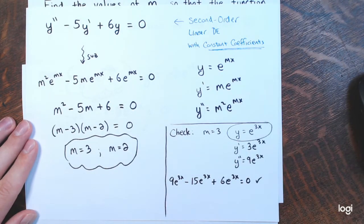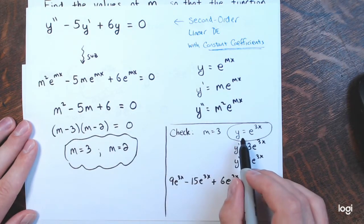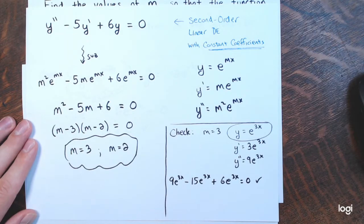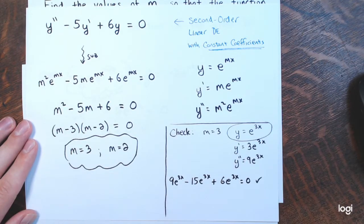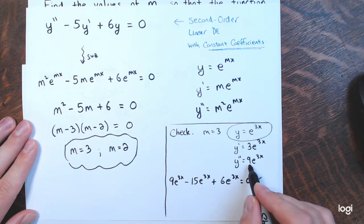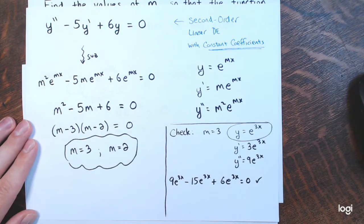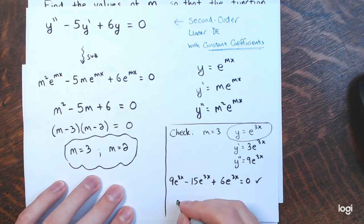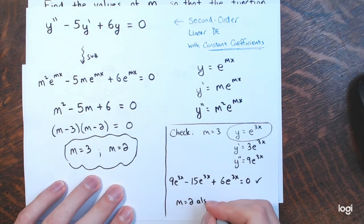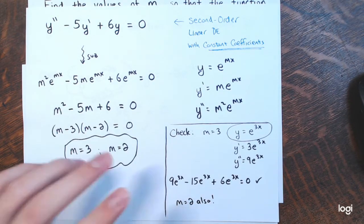You would do the same thing for m equals 2. Check y equals e to the 2x: y prime equals 2 e to the 2x, y double prime equals 4 e to the 2x. Substituting those should also satisfy the equation, so m equals 2 also works. Don't forget to check your solutions.